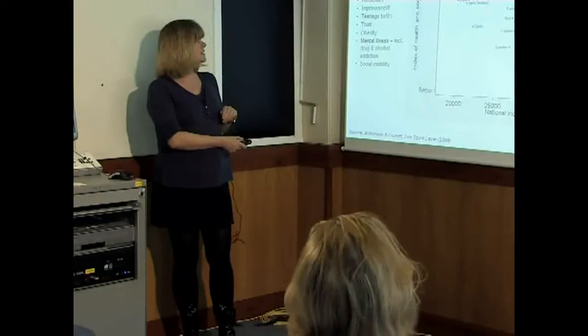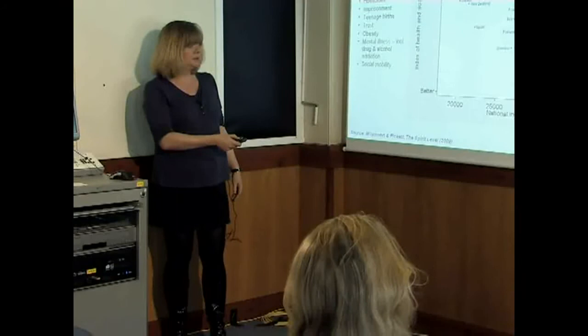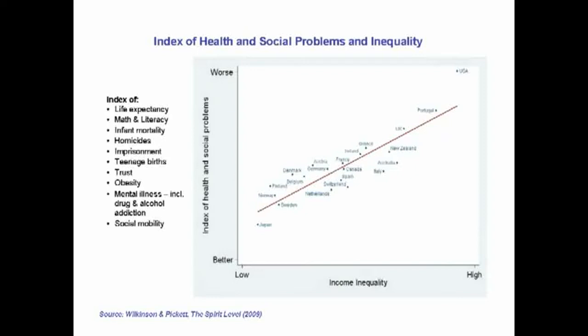In contrast, here's the same index — the same health and social problems combined. Again, we have countries at the top doing badly, like the USA, and countries at the bottom doing better with fewer health and social problems. But now we're showing them in relation to national income per person. We're on that flat plateau, and there's no relationship at all between our index of health and social problems and national income per person. So in relation to income inequality there's a strong close relationship, but in relation to national income per person, there's nothing.